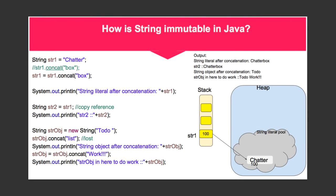In this case we are creating the string through the string literal method, so it will be created in the string literal pool. Since there was already a string named Chatter, the reference of the Chatter will be stored in referencing variable str1.